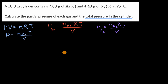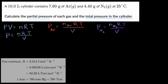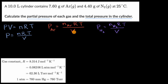We already know several of these things. We can look up the ideal gas constant with appropriate units, and they've given us the temperature in degrees Celsius, which we'll convert to Kelvin, and they've also given us the volume. So all we really have to do is figure out the number of moles of each gas. To do that, they give us the mass, and we just have to think about molar mass.